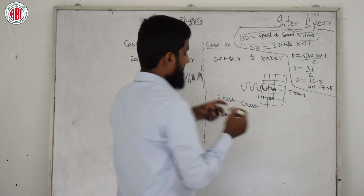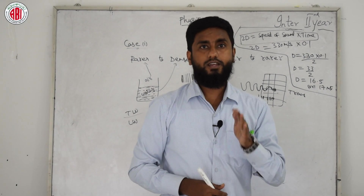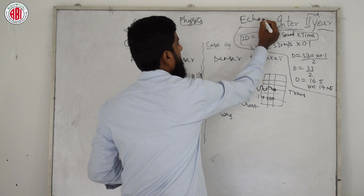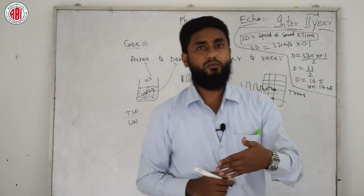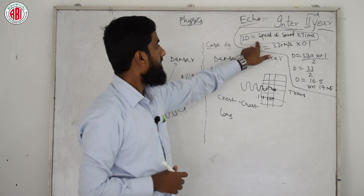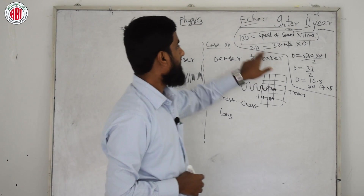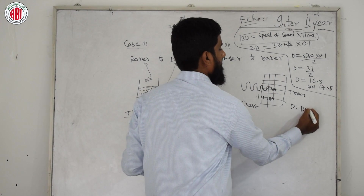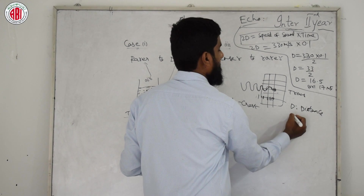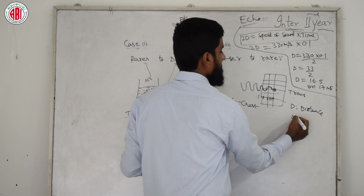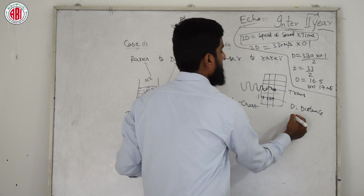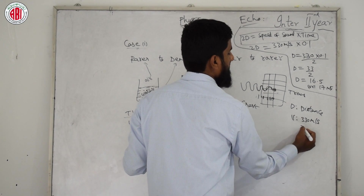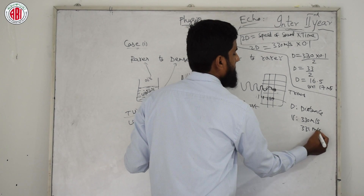Make sure you copy the echo formula with the side heading 'Echo Formula'. The formula is: 2d = speed of sound × time, where d is distance and speed of sound (v) is 330 m/s or 331 m/s depending on the problem. Time required (t) is 0.1 seconds.